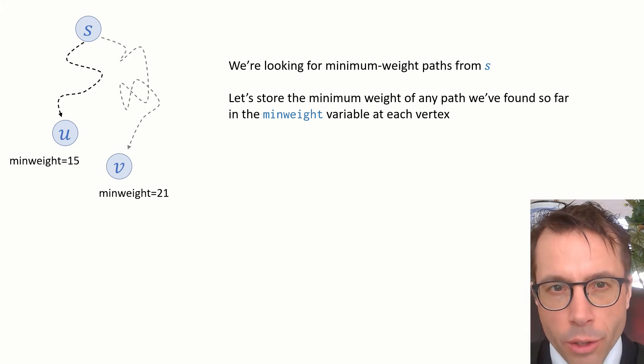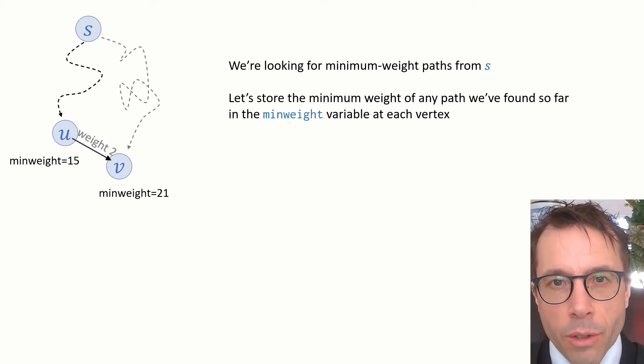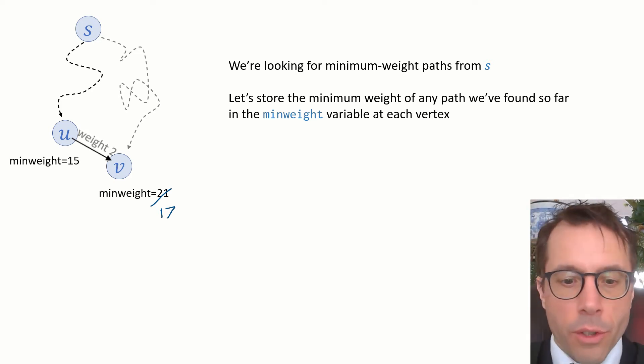Let's say we're looking at some vertex u, and we scan through all the edges out of u. And let's suppose we find an edge from u to v of a certain weight. What we do then is we ask ourselves, does this give us a better path to v than what we knew before? In this case, we've previously found a path to u of weight 15, and we can extend it to get a path to v of weight 17. And if 17 is less than the best we had previously found for getting to v, then hey presto, we have an improvement. We'll update v dot min weight to be equal to 17.